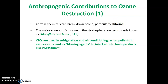There are a variety of chemicals that have the ability to break down the ozone layer. The one that has caused the destruction we have seen since the 1950s is chlorine, which appears on the periodic table as Cl.